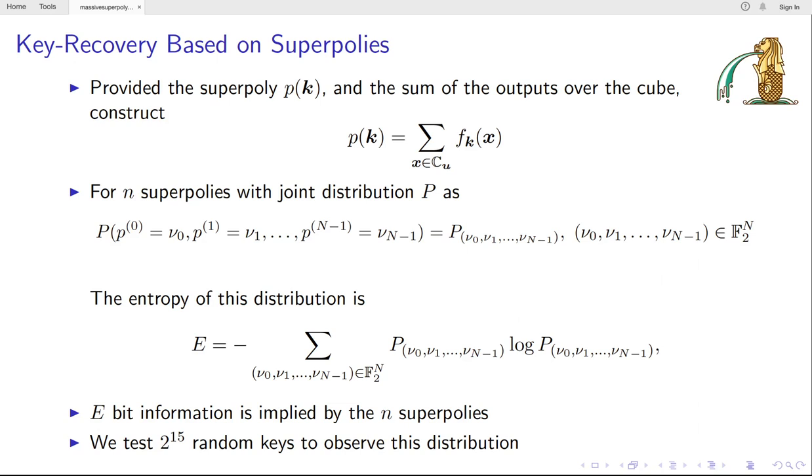If the entropy is E, then we can recover 80 minus E bits of k information on average. To know the distribution, we test 2^15 randomly chosen keys to observe this distribution.